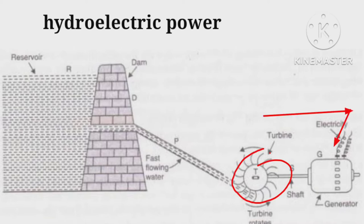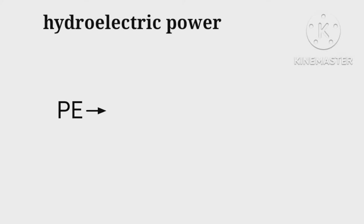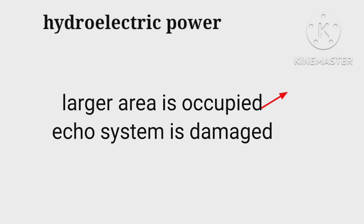Energy transformation is PE transformed to KE to mechanical to electrical energy. Disadvantages are large areas of agricultural land are occupied, creating human rehabilitation problems and ecosystems come down.